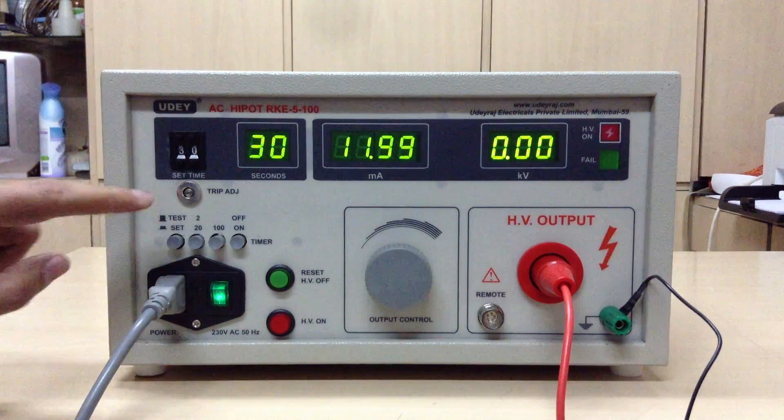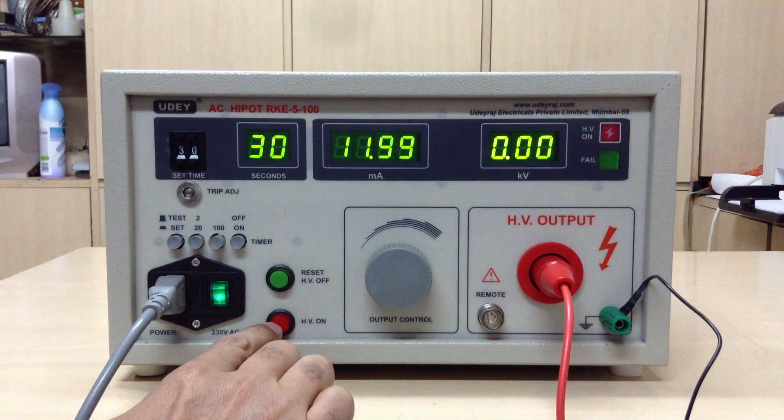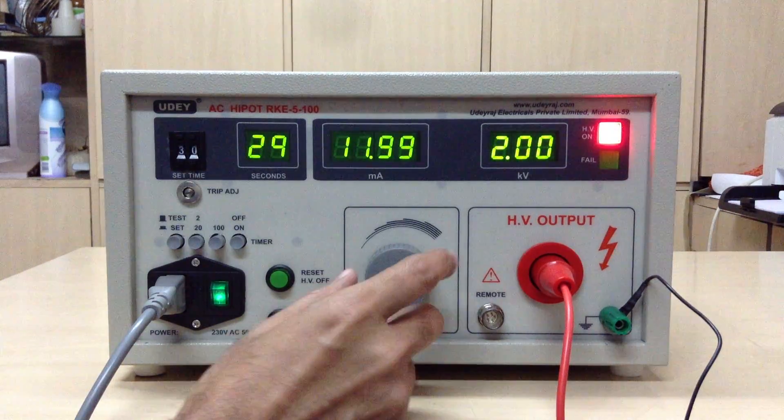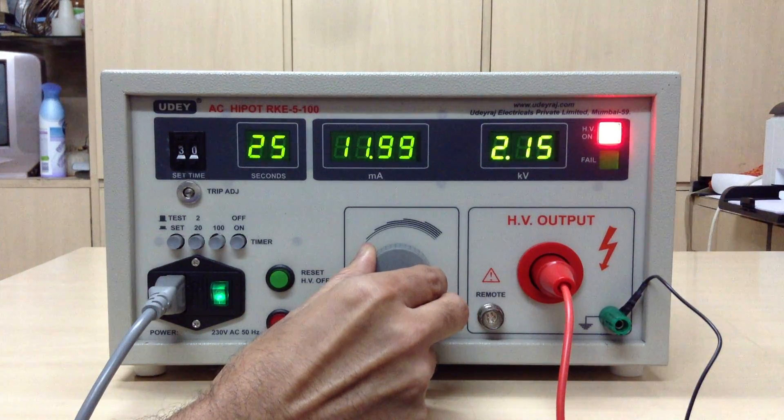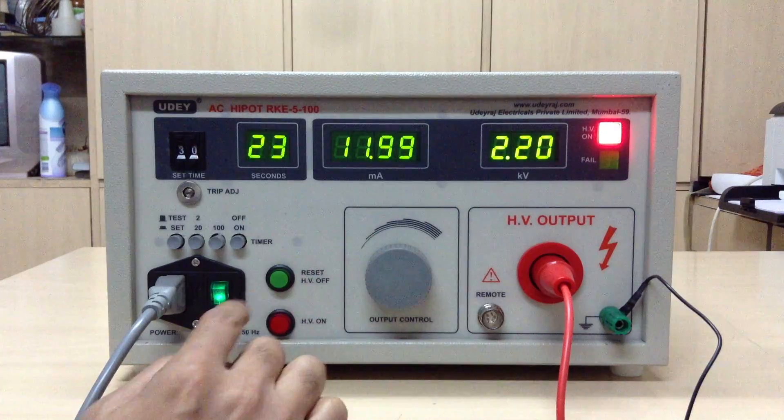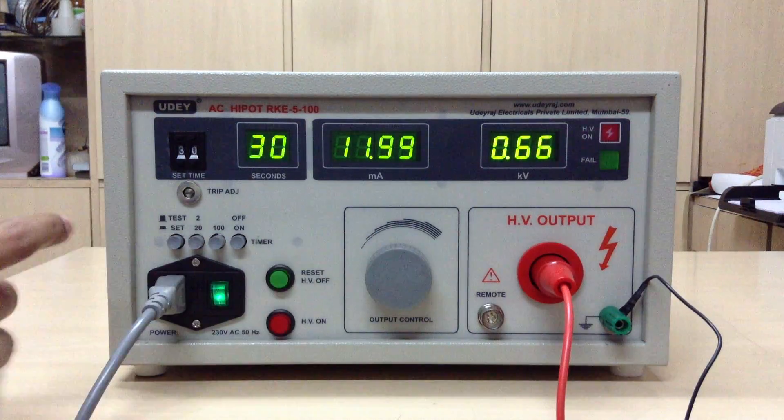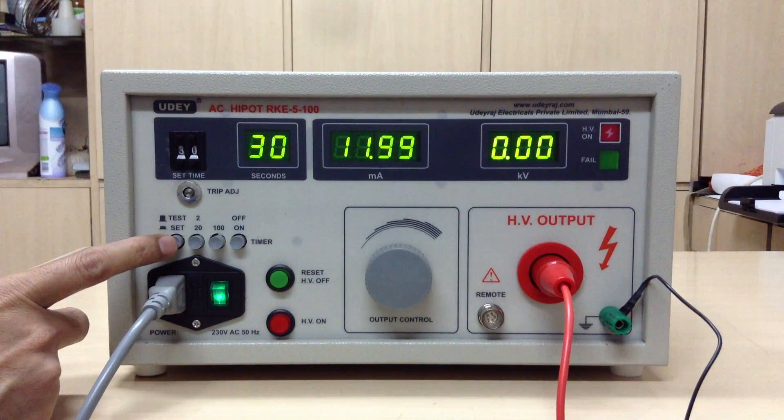We select 30 seconds and then we can set the HV ON in set mode by selecting maybe 2.2 kV, and then just say HV OFF and then select the mode to test mode.